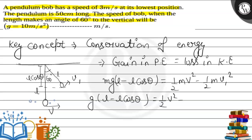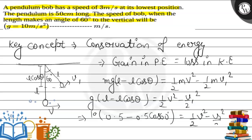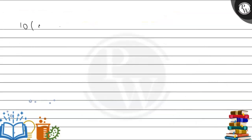We have to find the value of V1. For this, g = 10, L is 50 cm, which is 0.5 m. The height term becomes 0.5 minus 0.5 into cos 60 degrees. So the equation is mg(L minus L cos θ) equals one-half m V squared minus one-half m V1 squared. Substituting: 10 into (0.5 minus 0.5 into cos 60) equals one-half V squared minus one-half V1 squared.